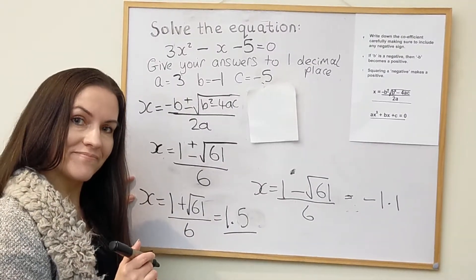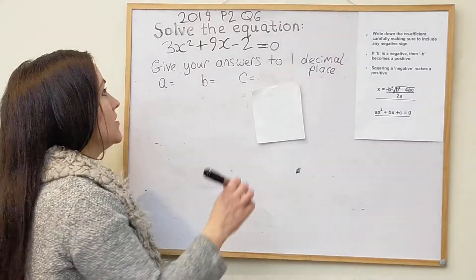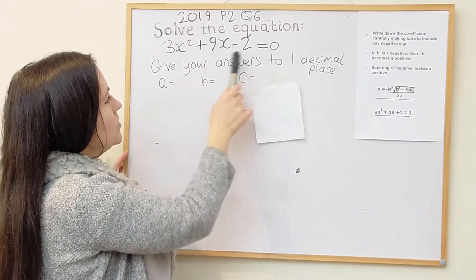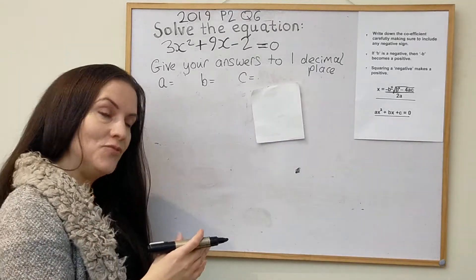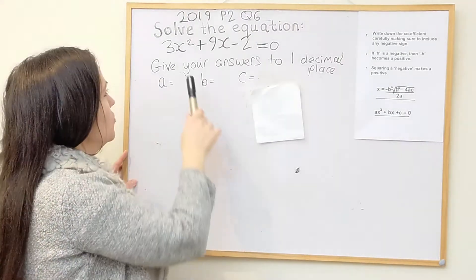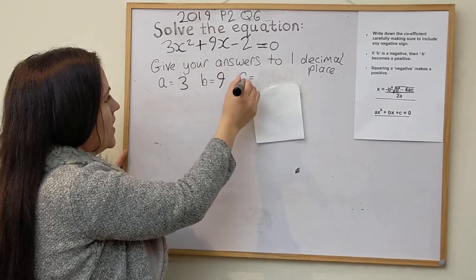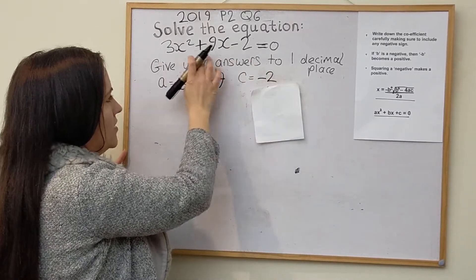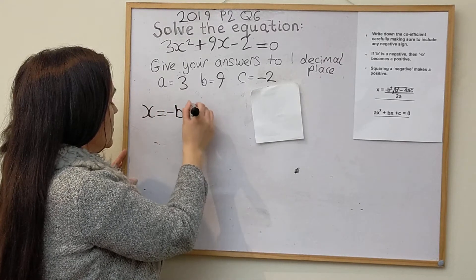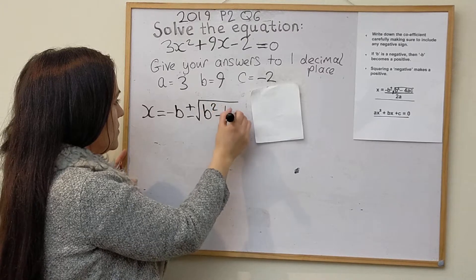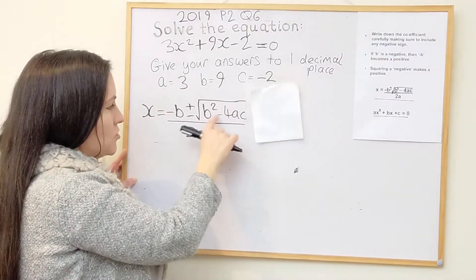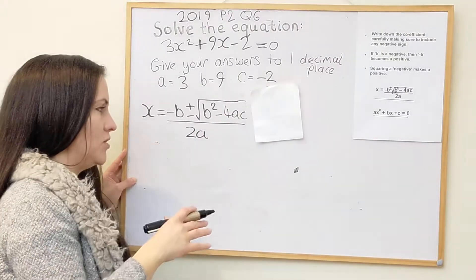The next example is from the 2019 paper, question 6: solve 3x squared plus 9x minus 2 equals 0, giving answers to one decimal place. Writing down the coefficients: a is 3, b is 9, and c is negative 2. We write down the formula: x equals negative b plus or minus the square root of b squared minus 4ac all over 2a. In all the examples we've been working out the discriminant — b squared minus 4ac — first, which is used for finding the nature of the roots.